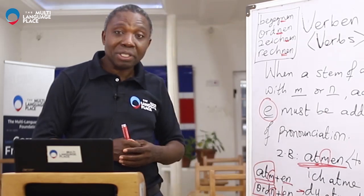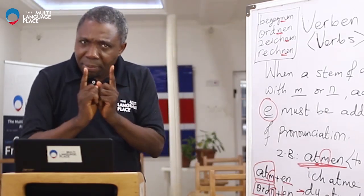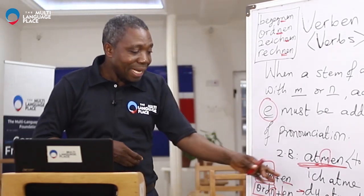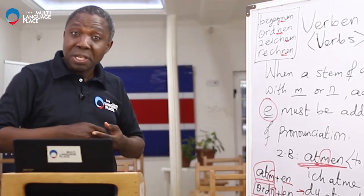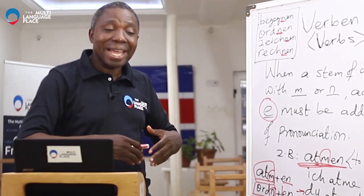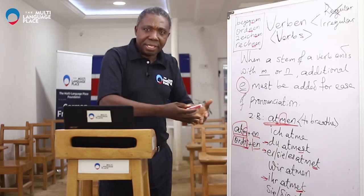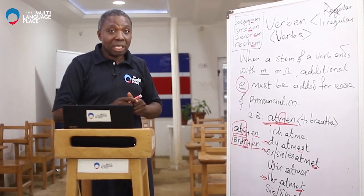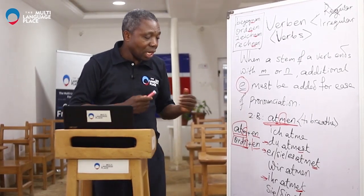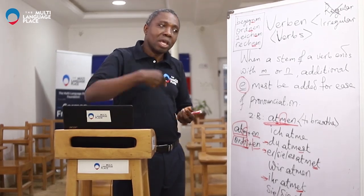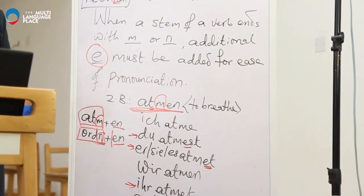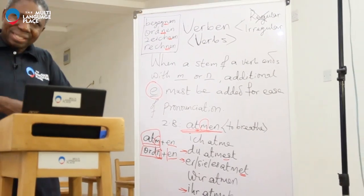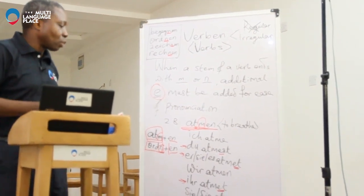Du atmest means you breathe. Remember what I said in the last video: 'ich atme' means I breathe, and it also means I am breathing. So in the present tense, for all the verbs, it signifies what you do habitually and also what you are doing in the present continuous tense.